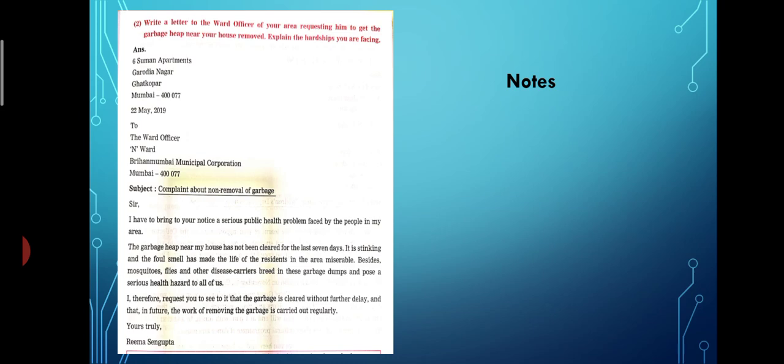Now, you have written notes. Write a letter to the ward officer of your area requesting him to get the garbage heap near your house removed. Explain the hardships you are facing. So, you are going to write a letter to your ward officer of your area requesting him to get rid of the garbage heap near your house. Explain the hardships that you are facing. So, you see left-hand side is the address. That is 6 Suman Apartments, Garodia Nagar, Ghatkopar, Mumbai, 400-077. Then you leave a line, you write the date. Now, there it is given 22nd May 2019. You can put today's date. That is 15th March 2021.